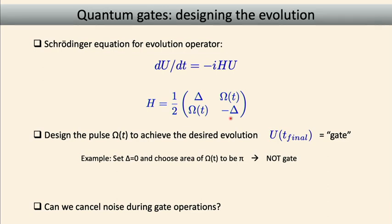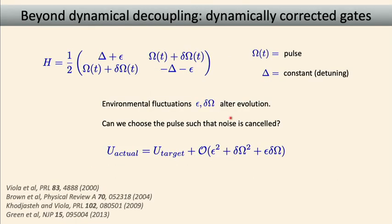In reality, the Hamiltonian has noise fluctuations on the detuning parameter and on the driving field itself. The question is: can we still realize the target gate, and can we choose omega of t to eliminate at least the first few orders of these noise terms, assuming the noise is weak enough for a perturbation series expansion? There are many possible control fields and many different ways to go from the identity matrix to some final target gate, and some ways are much more robust to noise compared to others.